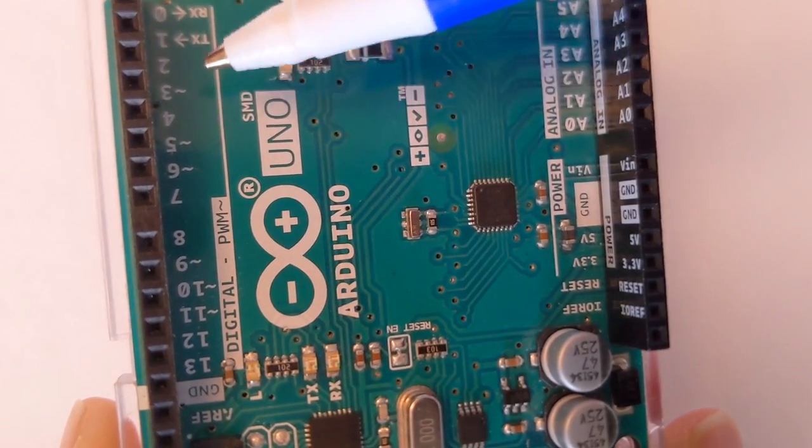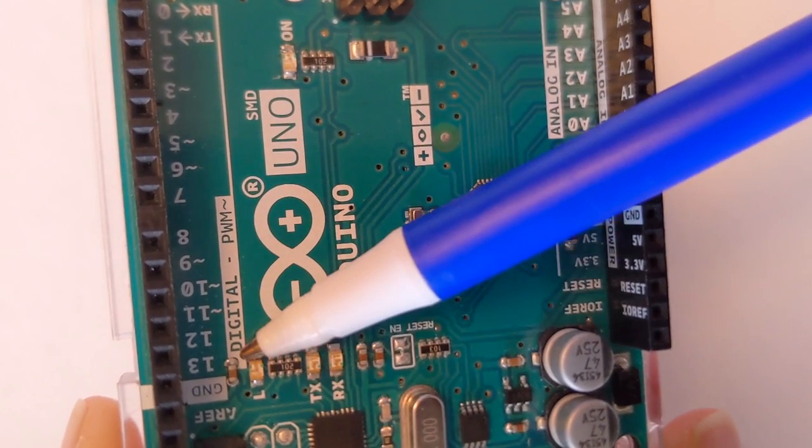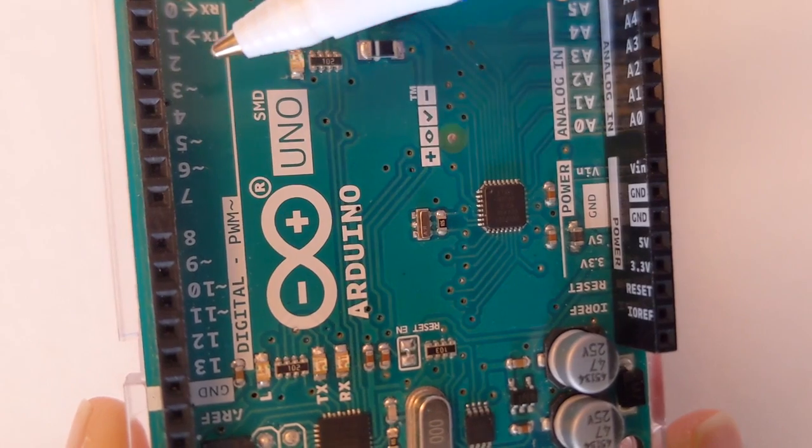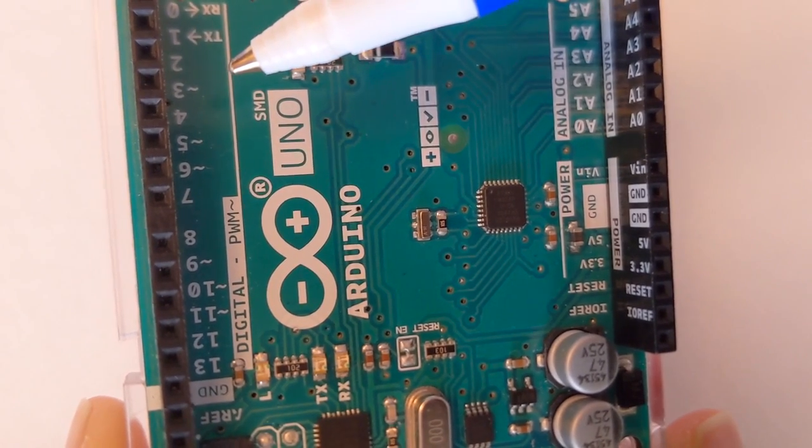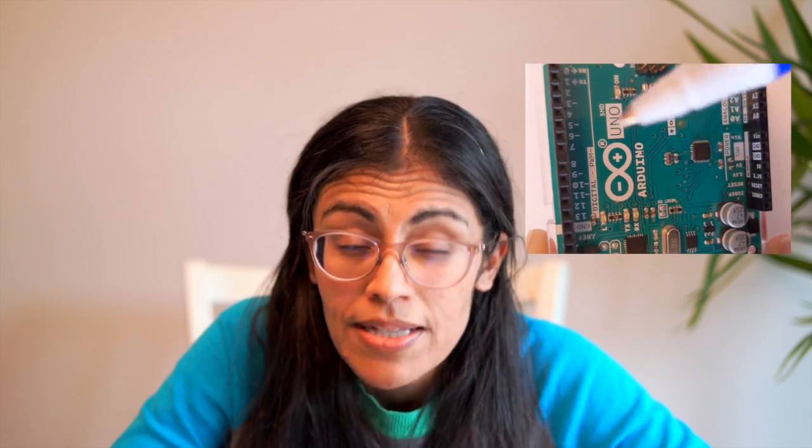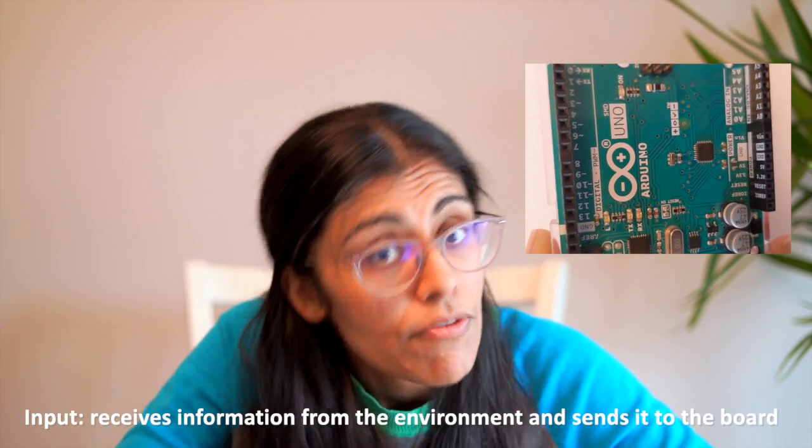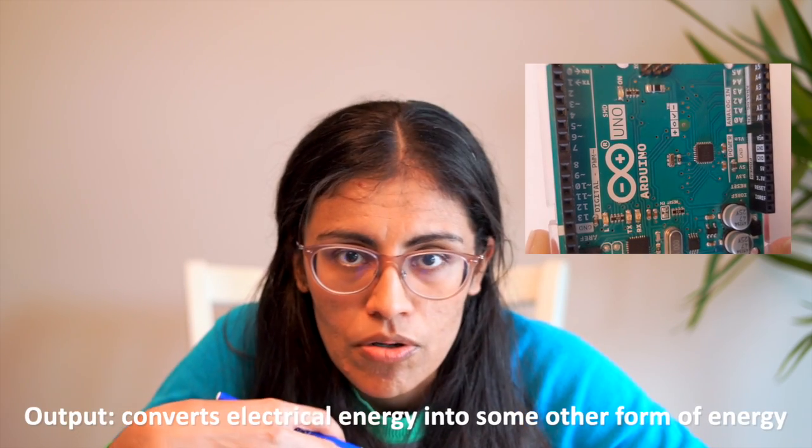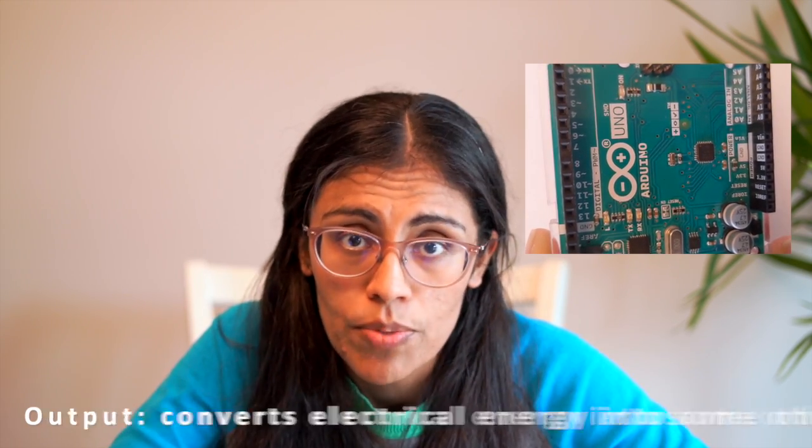So these are pins labeled 0 through 13 on one side of the board. And we won't be using 0 and 1. So 2 through 13 are available. And these pins are what connects different parts of our circuit to the board, specifically parts that we would like to either receive information from, so that would be an input, or that we'd like to send an electrical pulse out to. Those would be outputs.